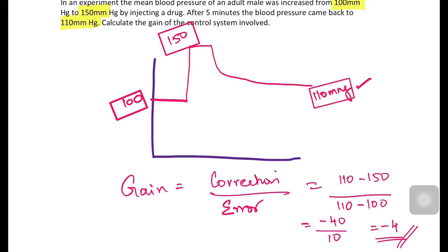The sign is negative because this is a negative feedback system — ignore the sign when comparing magnitudes. The higher the magnitude of the gain, the higher the effectiveness of the control system. What if the error is zero? If the correction completely restores the original value, the error is zero.